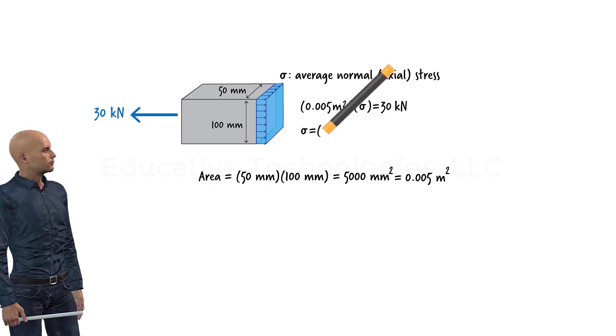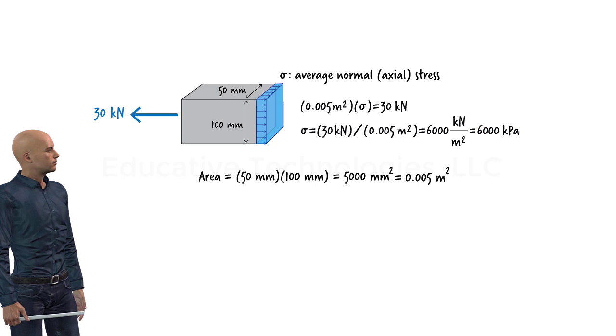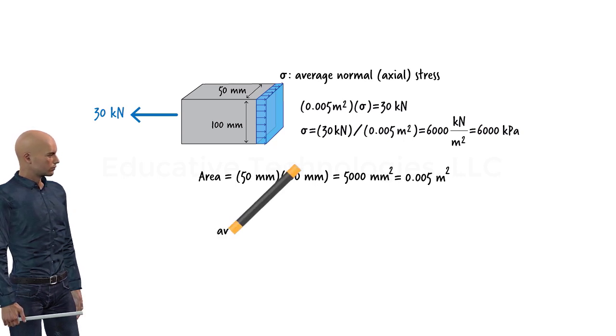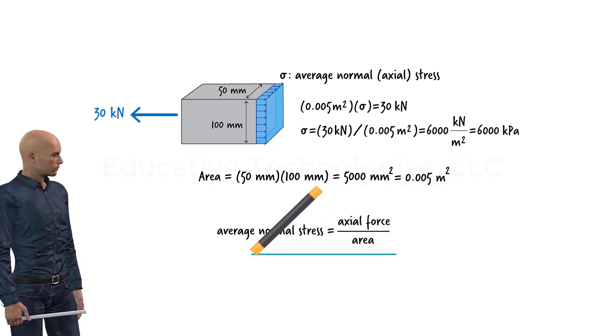Solving this equation for sigma, we get the average normal stress in the member. The average normal stress, therefore, can be viewed as force per unit cross sectional area of the member.